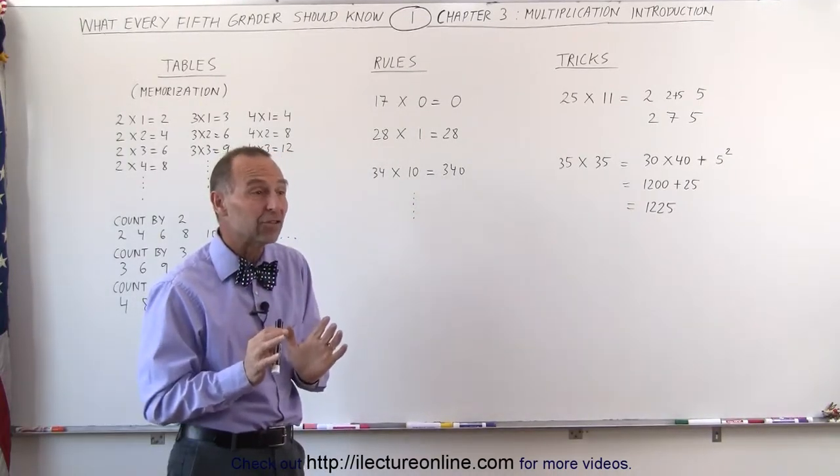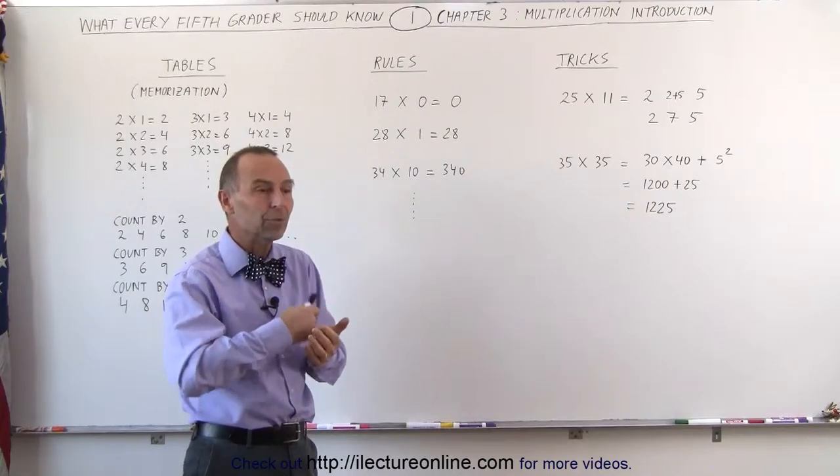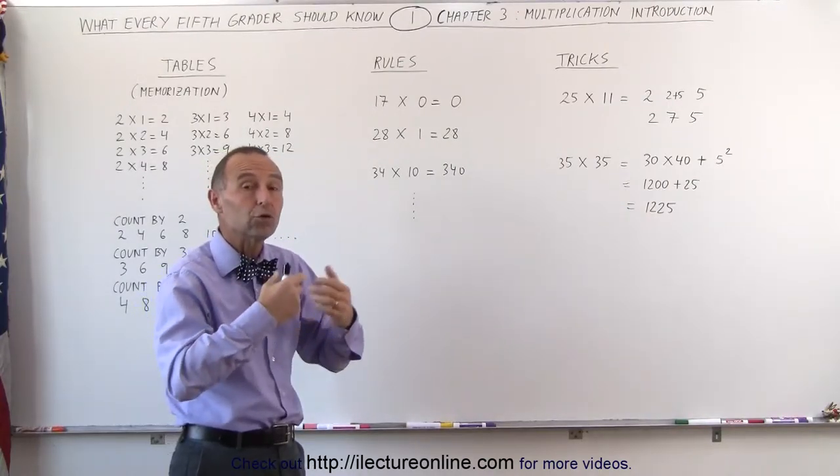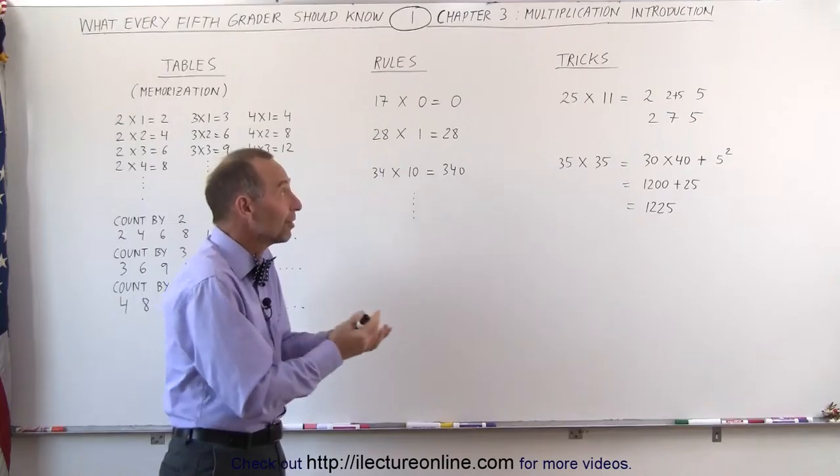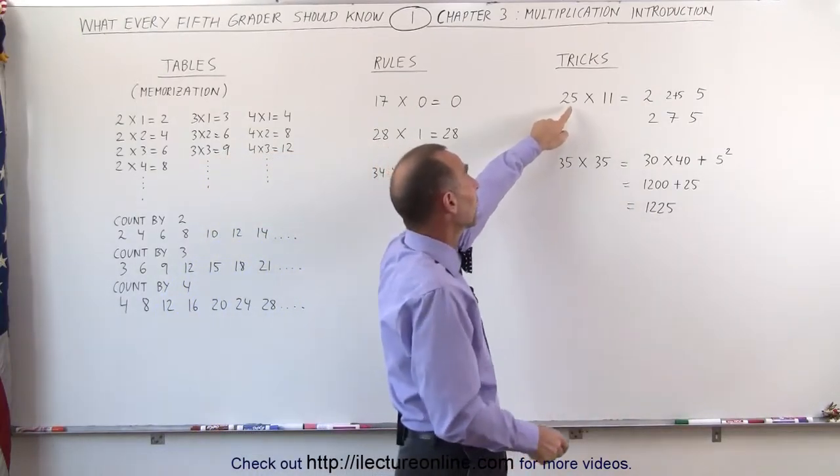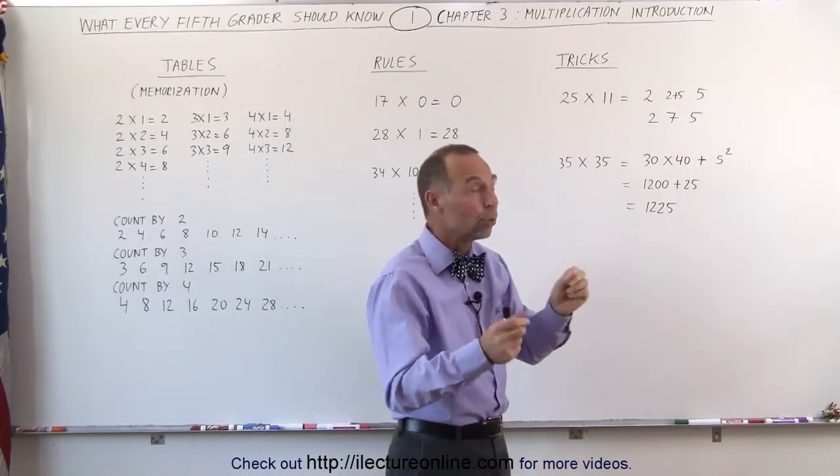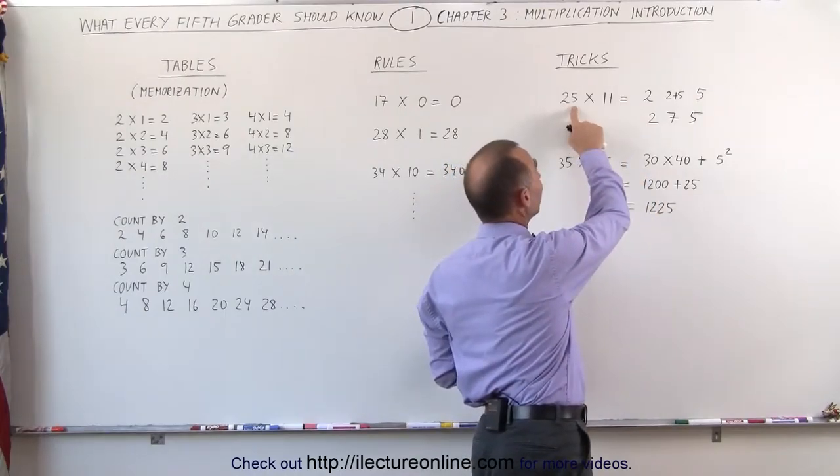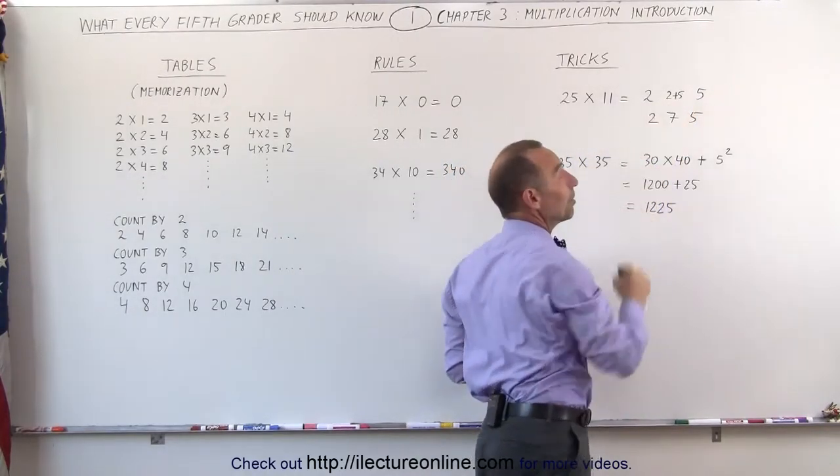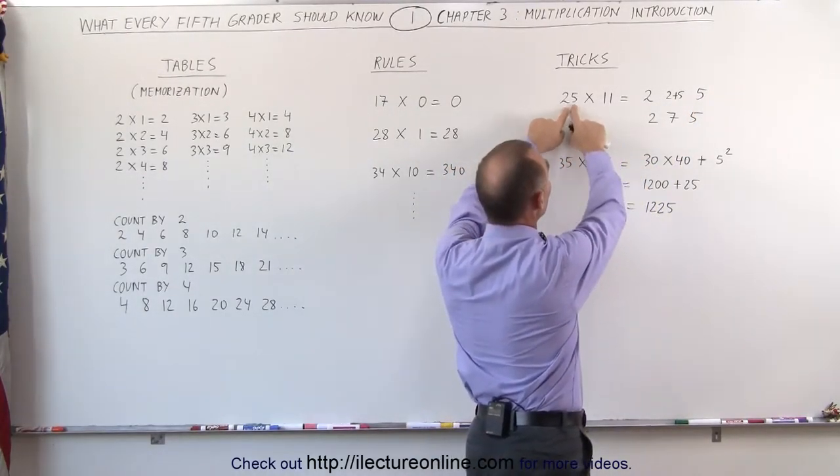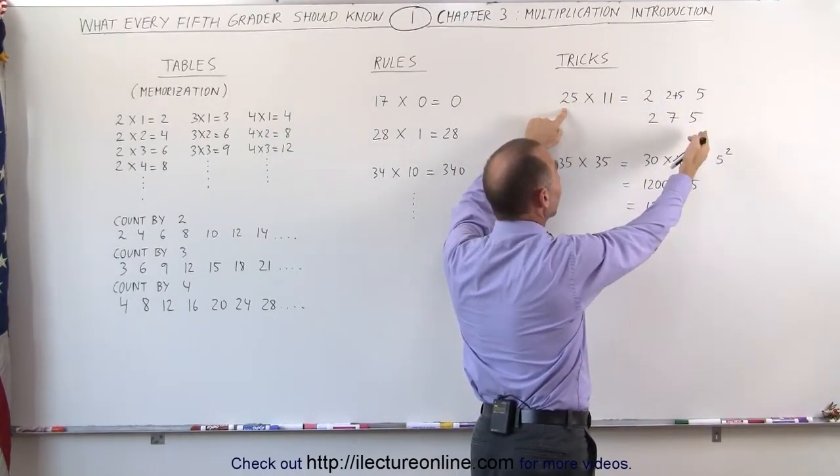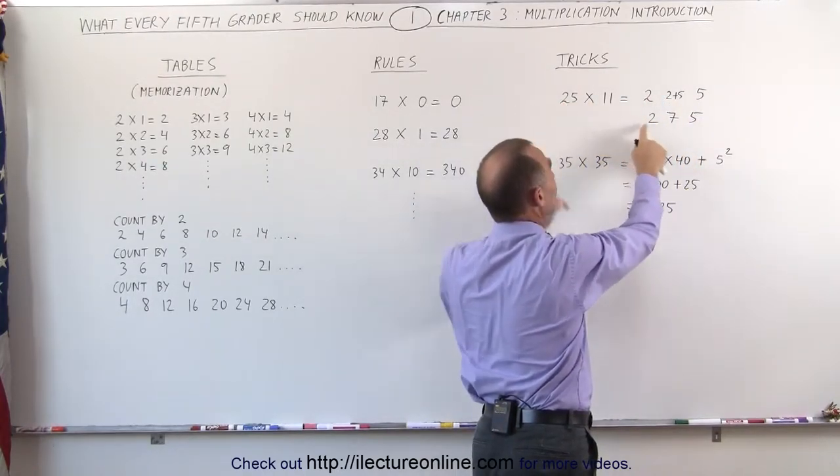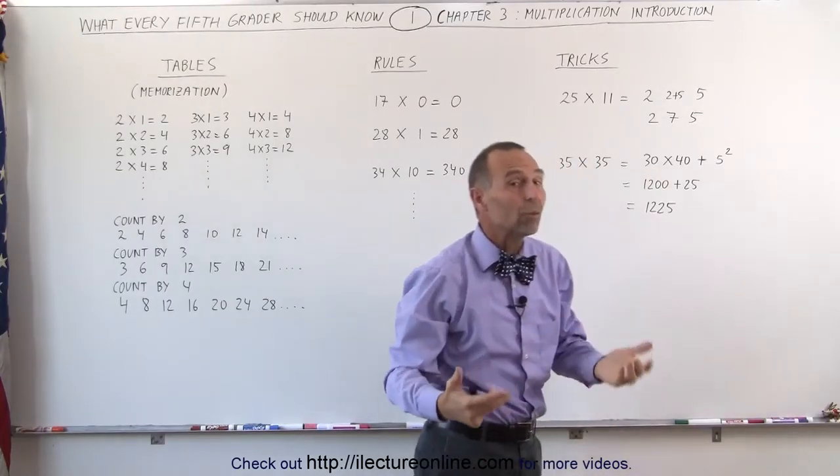There's lots of tricks to multiplication that help us multiply not just one-digit numbers together, but also two- and three-digit numbers together. For example, let's say we want to multiply 25 times 11. The rule is that you put down the first number and the last number, you leave some space in the middle, and then you add the two numbers together, 2 plus 5, which becomes 7. And the answer is 25 times 11 is 275. This is one trick.